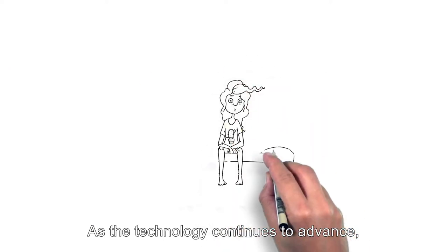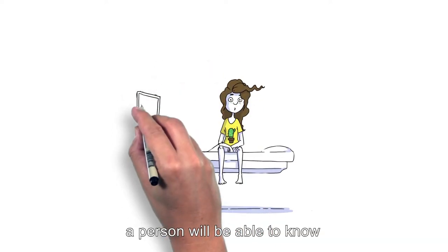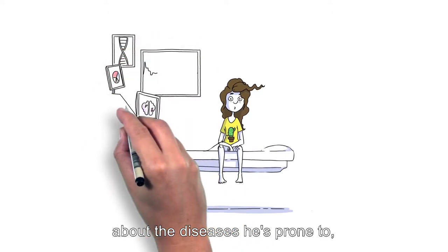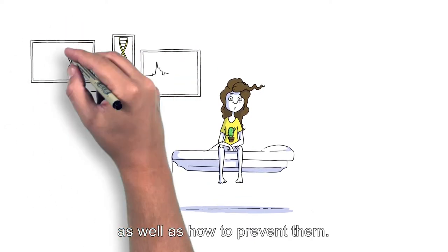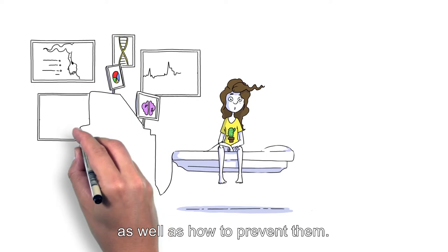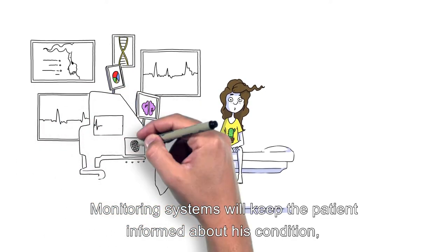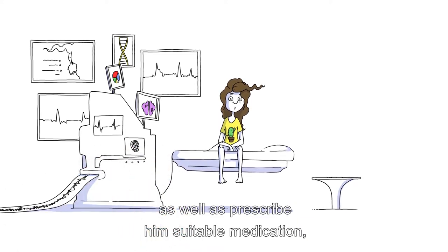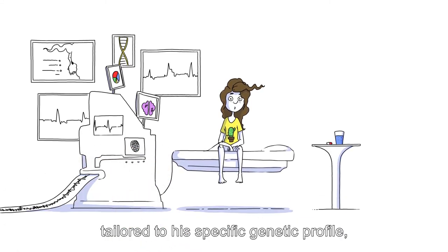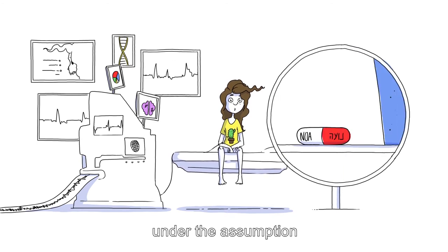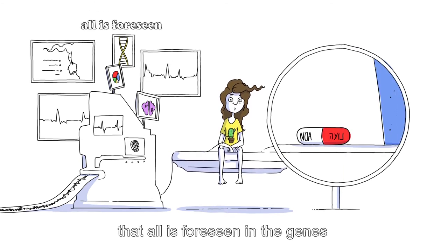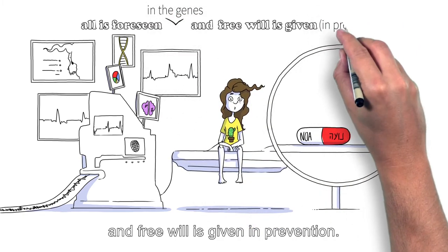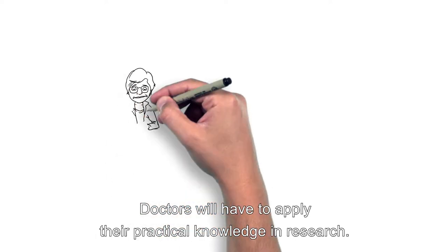As the technology continues to advance, a person will be able to know, at a very early stage, about the diseases he is prone to, as well as how to prevent them. Monitoring systems will keep the patient informed about his condition, as well as prescribe him suitable medication tailored to his specific genetic profile, under the assumption that all is foreseen in the genes and free will is given in prevention.